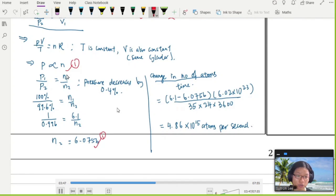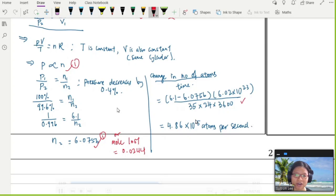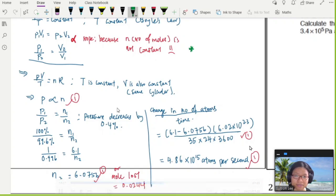Where are the marks? P proportional to n is one mark. You use this proportionality relationship to calculate either the final number of moles or how much moles are being lost. How to get 0.0244 - instead of 0.996, you put 0.004. Either you get this number or you get this number, and then you find the Avogadro constant. By multiplying the Avogadro constant and dividing by the seconds, you get the final answer.